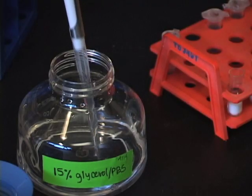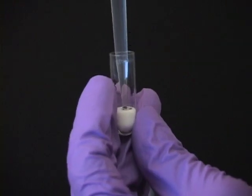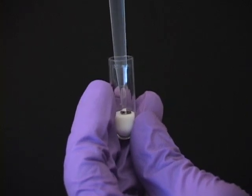Add 1 mL 15% glycerol in PBS, holding the coverslip in place with the tip of your pipette.